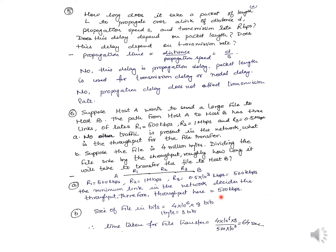Throughput is basically the rate at which files are received correctly at the destination. To find the time to transfer the file from host A to B: the file is 4 × 10⁶ bytes, which must be converted to bits — 4 × 10⁶ × 8 bits. Time = (4 × 10⁶ × 8) divided by (500 × 10³) = 64 seconds.